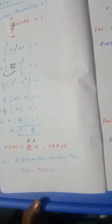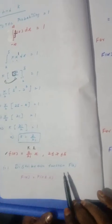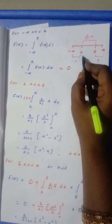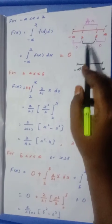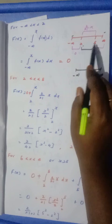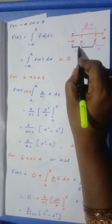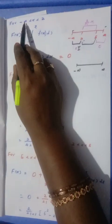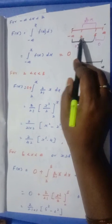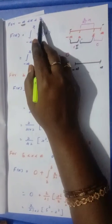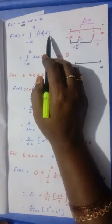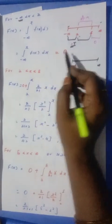Next question: find the distribution function F(x). This is the continuous case, so we consider the full range from minus infinity to plus infinity broken into regions. The first region is minus infinity to 2. In this interval, the integral is zero, so F(x) equals 0 for x less than 2.